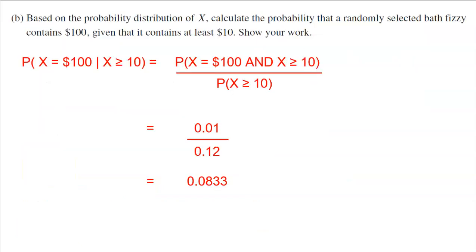All right, the next question said, based on the probability distribution of X, calculate the probability that a randomly selected bath fizzy contains $100, given that it contains at least $10. So it's important that you see the word given there. That is of course gonna create a conditional probability. If the question just stopped at the probability that a randomly selected bath fizzy contains $100, that would be easy, 0.01, 1%, just go back and look at the table.